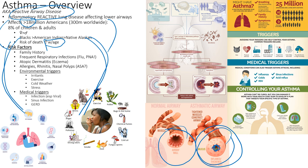Risk factors: family history of asthma puts you at risk. Frequent respiratory infections like flu and pneumonia put you at risk from chronic lung inflammation — your lungs become hypersensitized. Atopic dermatitis is associated with asthma; kids with eczema and scaly rashes are at risk for asthma. Allergic rhinitis and nasal polyps are other commonalities — patients with nasal polyps are probably also at risk for asthma.